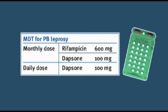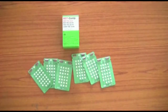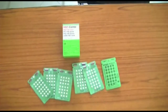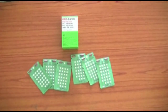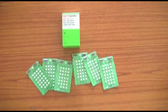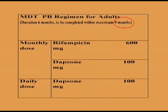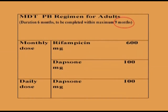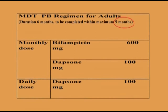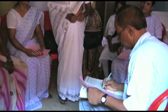For PB leprosy, treatment is given for 6 months. Here are the 6 blister calendar packs. The monthly dose or pulse dose is taken at the start of each pack at the health facility. The daily dosage is taken at home every day for 6 months. To be effective, the course must be completed within 9 months or less. It is useful to write the due date of treatment completion just after the date of the first dose on the patient record card.